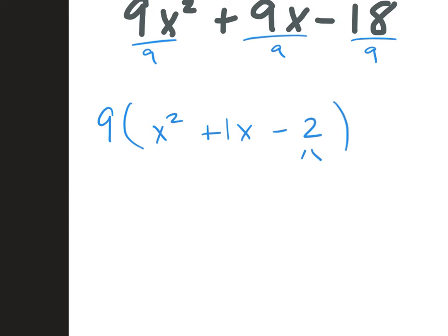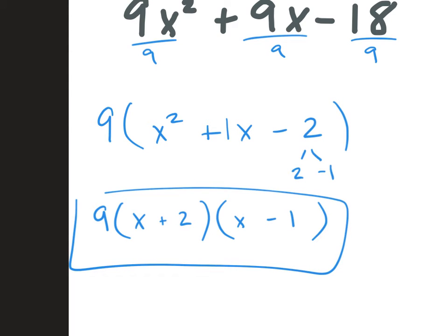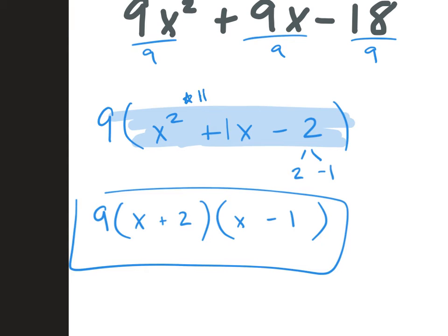Two things that multiply to negative 2 but add to positive 1 — like what? 2 times negative 1. That multiplies to negative 2, and 2 minus 1 would be positive 1. So that 9 just stays out front — hangs along for the ride. We put our x's first, and then plus 2 and minus 1. So this is our answer. Any time you have three terms in your parentheses, you have to factor, and then we would get our two sets of parentheses — our binomials, because there are two terms in each.